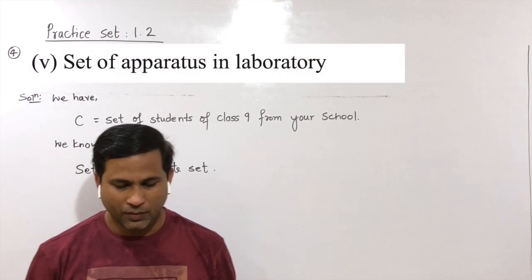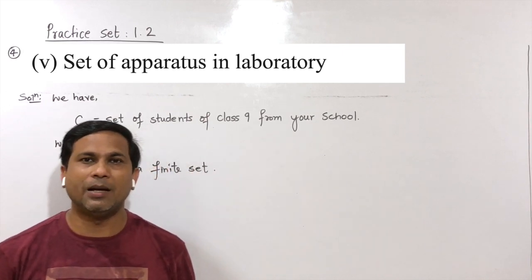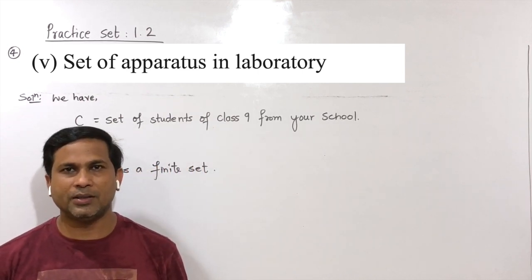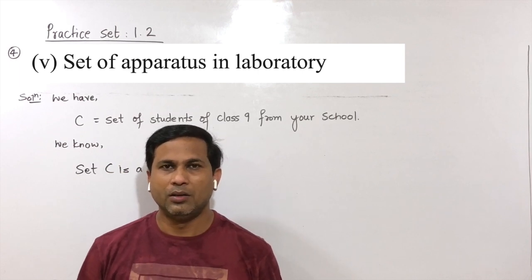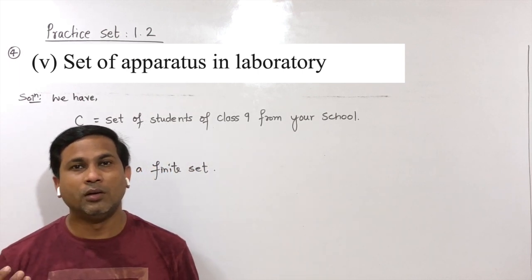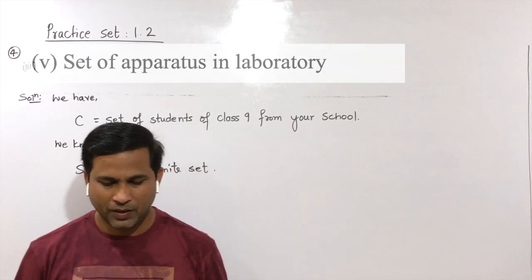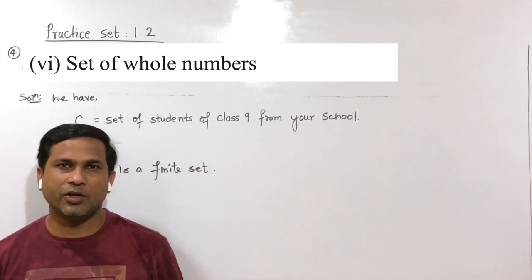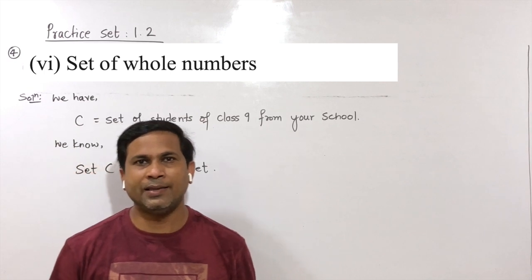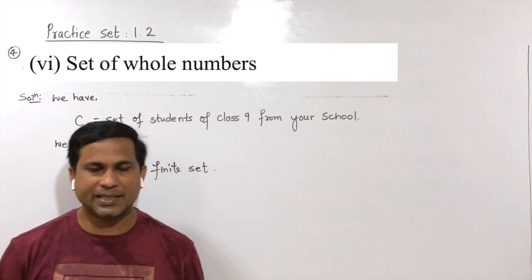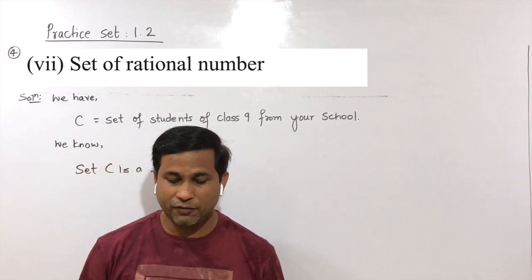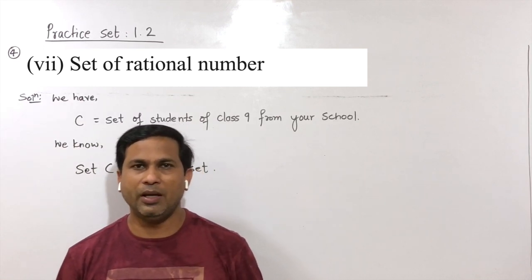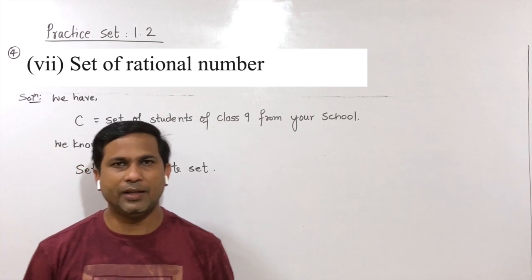Fifth: set of apparatus in a laboratory. Since lab assistants keep a record of the number of apparatus in the laboratory, this set is also a finite set. Sixth: set of all numbers — without any condition, this set is an infinite set. Last: set of rational numbers — without any condition, the set of rational numbers is also an infinite set.